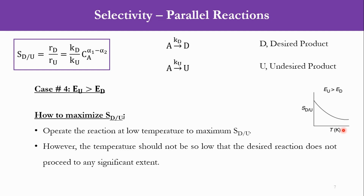However, the system temperature should not be so low that the desired reaction does not proceed to any significant extent. So we have to maximize selectivity, but we should not set a temperature so low that the reaction does not proceed. That is the tricky part for case number 4.